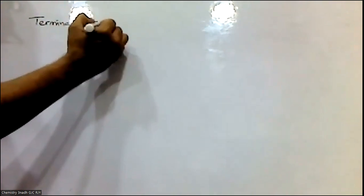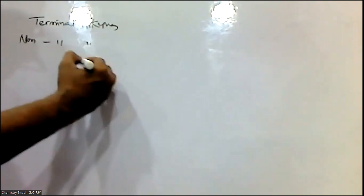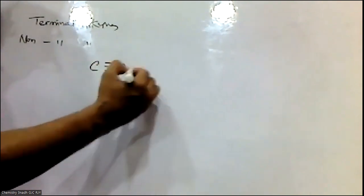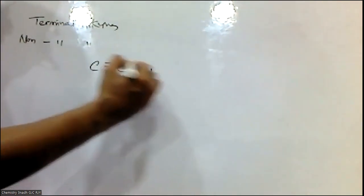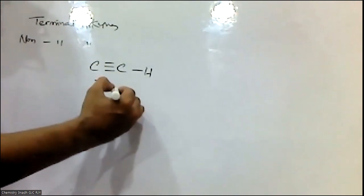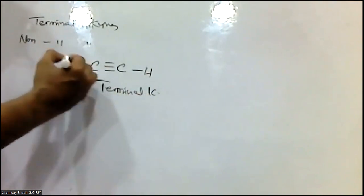In the first video, we discussed that alkynes are of two types: one is terminal alkynes and another is non-terminal alkynes. If the carbon-carbon triple bond carbons have at least one hydrogen, it is called a terminal alkyne.